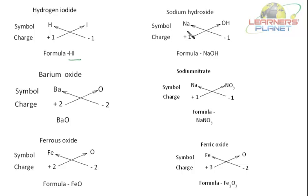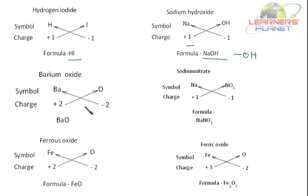For sodium hydroxide, the symbol for sodium is Na, with a charge of plus 1. Hydroxide is a radical written as OH minus. The cross placement of valencies is done and you get NaOH. It's just the numbers that are cross-placed. The charges are adjusted so they are neutralized — a compound should be neutral.